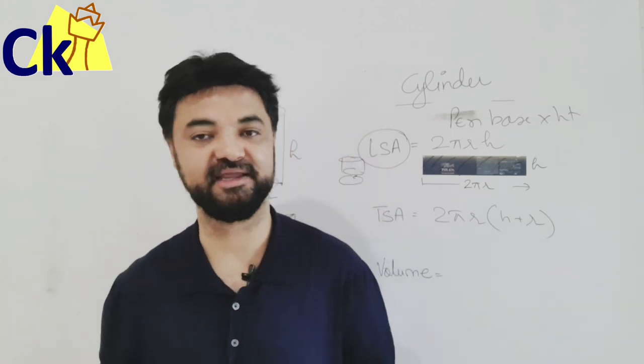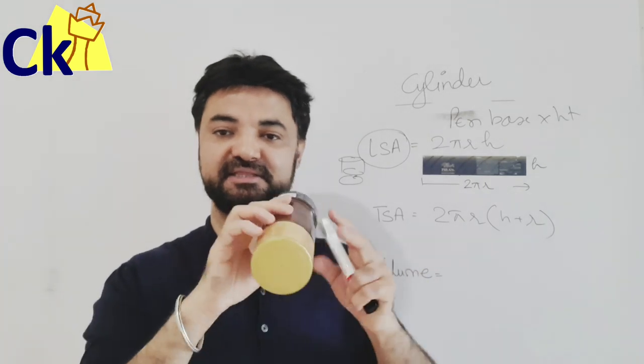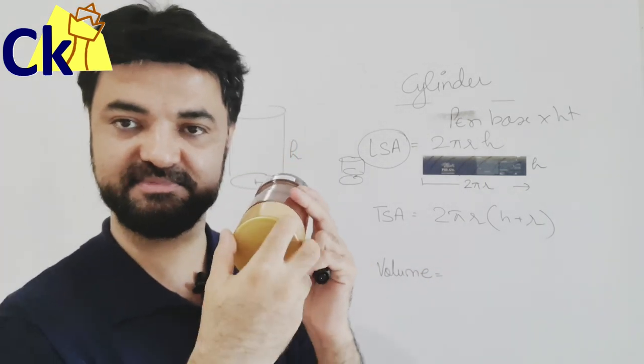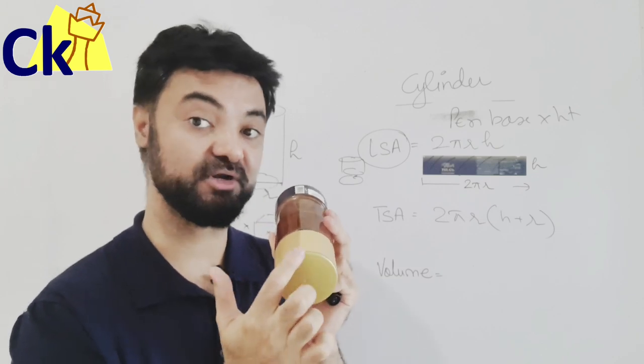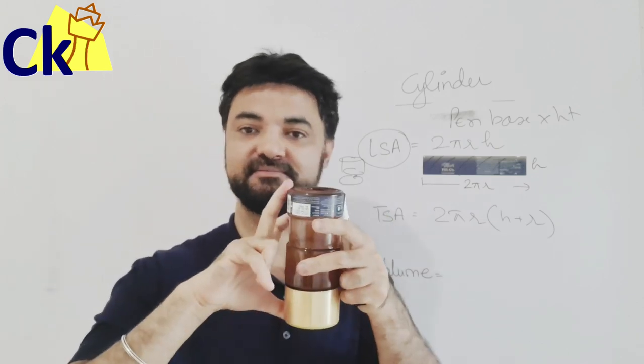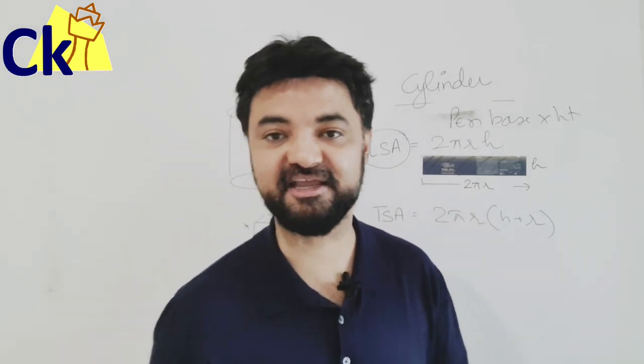Like this, for every diagram you give me, if you can find the perimeter of the base into height, I will get the curved surface area. This is the perimeter of the base - this outside perimeter border into height gives the lateral surface area.